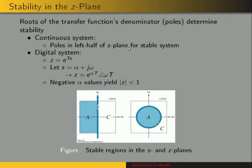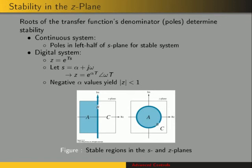The left half of the s-plane means a negative value for alpha — the real part is negative. And if alpha is negative, then that means the magnitude of z is less than 1, since e to some negative value is going to be less than 1. This figure shows the stable regions: the left half-plane in the s-plane, and inside the unit circle in the z-plane. That is the stability criterion for a discrete system.